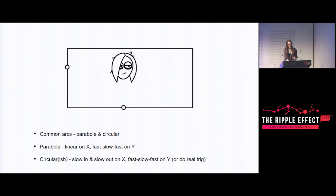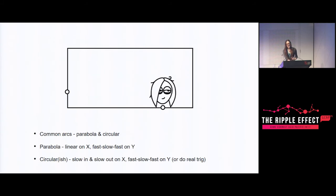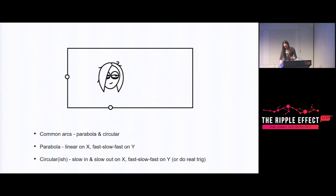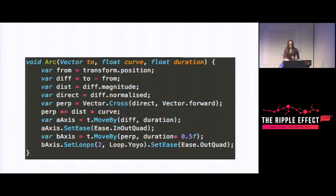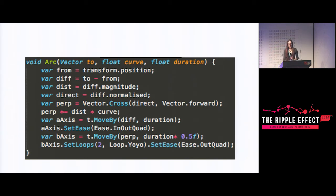If you want circular-ish, just make both axes quadratic - it's close enough. If you want to be exact you'd use sine, but quadratic usually looks fine. Here's a little bit of code - nifty Unity-ish pseudocode of a function that does a procedural arc using a cross product to get the perpendicular vector, composing the arc from two separate tweens. There's not all that much to it. It's pretty simple, and having stuff like that - composing motions together in a nicely exposed way - makes it really easy to quickly add a bit of life to things.